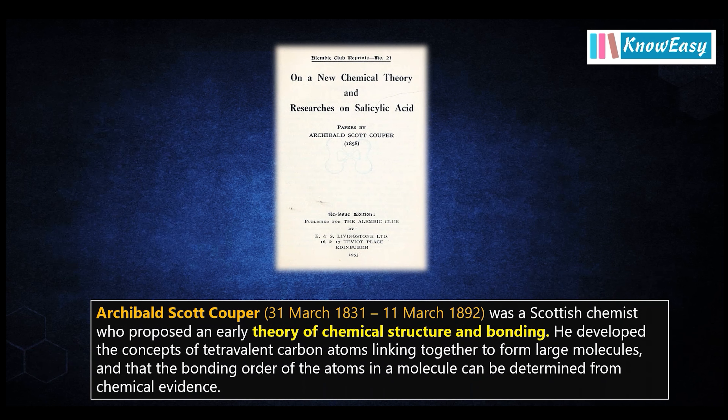These are the structures of alcohol and oxalic acid given by Archibald Couper using elemental symbols for atoms and lines for bonds in 1858. He was a Scottish chemist who proposed an early theory of chemical structure and bonding, developing the concept of the tetravalent carbon atom linking together to form larger molecules. Couper's contribution was instrumental in shaping the understanding of molecular connectivity. Now we will discuss the most important compound in chemistry — benzene.